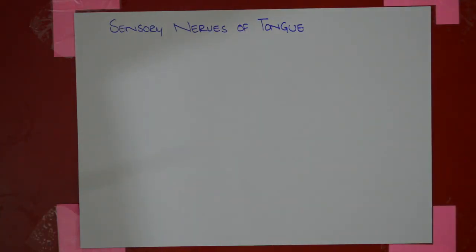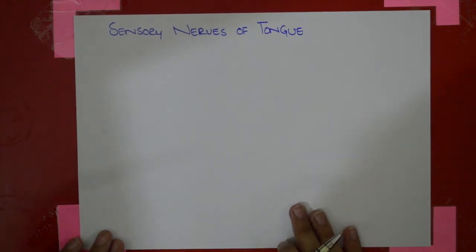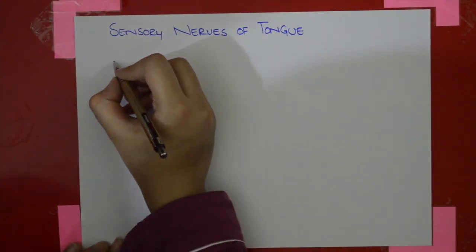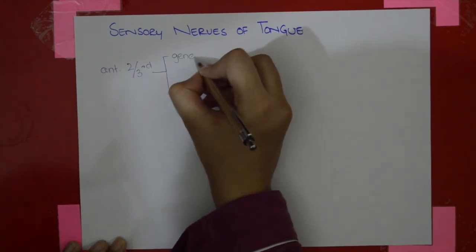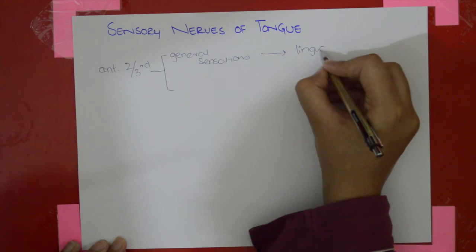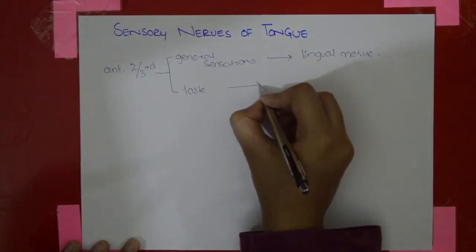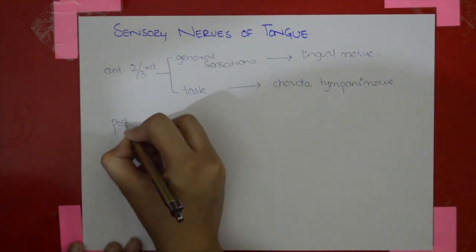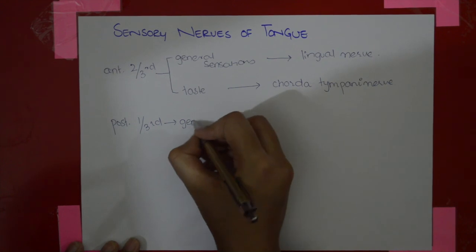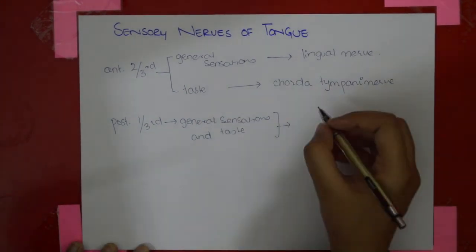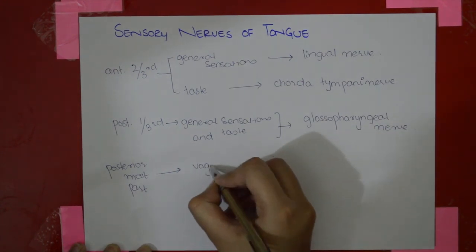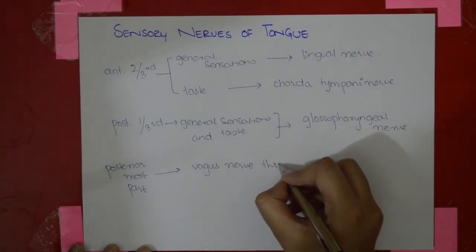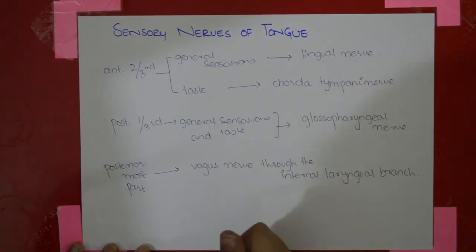Now the sensory nerves of the tongue, covering both taste and general sensations. For the anterior two-thirds of the tongue, general sensations are from the lingual nerve, and taste is from the chorda tympani nerve. For the posterior one-third, both general sensations and taste are supplied by the glossopharyngeal nerve. The posterior-most part is supplied by the vagus nerve, through the internal laryngeal branch.